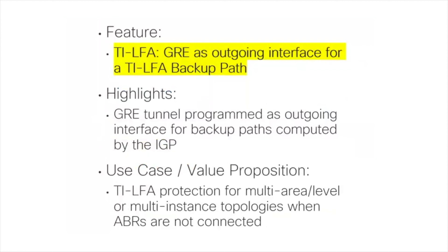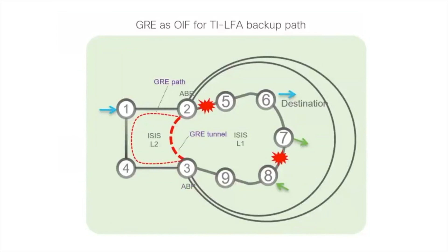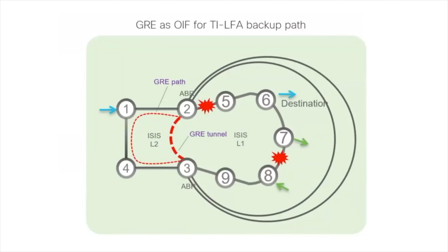Lastly in the IGP bucket, we discuss how to leverage GRE as an outgoing interface for a TI-LFA backup path. Many deployments rely on multi-domain or multi-level environments where ABRs or ASBRs are not directly connected. In the picture shown, routers two and three are the ABRs in a multi-level design. The goal is to provide TI-LFA within each level, but because these two ABRs cannot be directly connected, the IGP's ability to compute a backup path within the level is compromised. The solution is to allow a GRE tunnel to be used as an interface within that level.